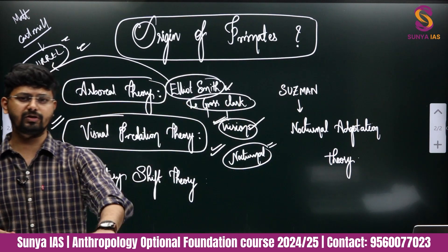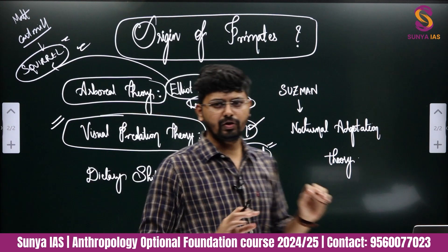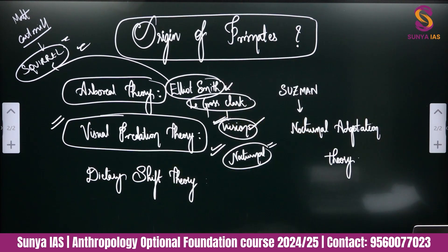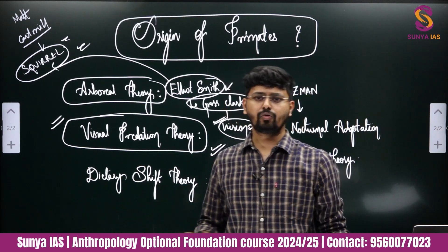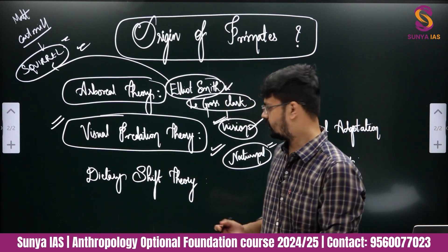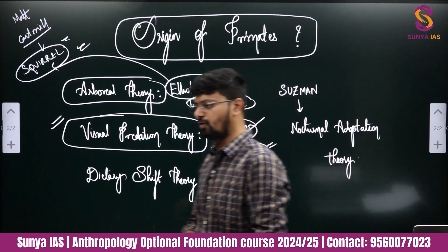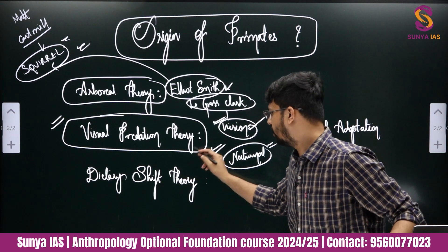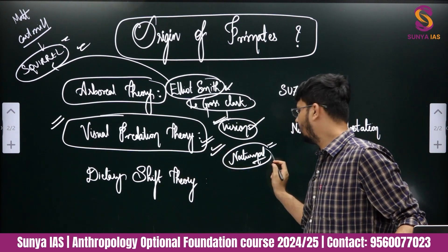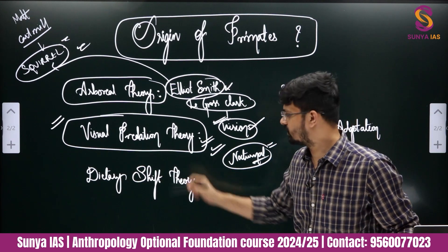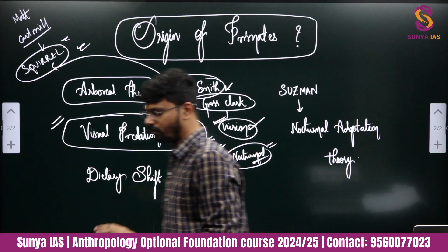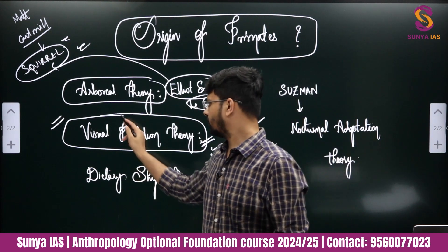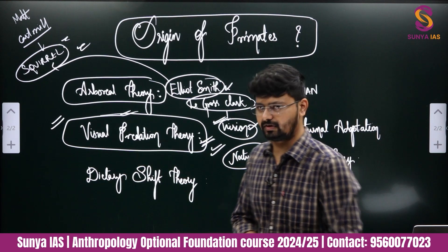Cartmill is not talking about arboreal adaptation — he is talking about predation through vision. When mammals lived under green, fleshy bushes in the forest and had to hunt for insects (since primates were insectivorous in nature), they needed better vision. In order to find and attack prey, vision developed, and from there the other features of primates developed.